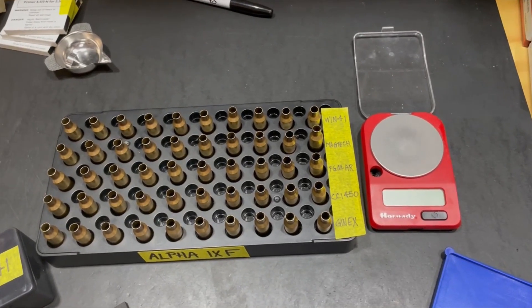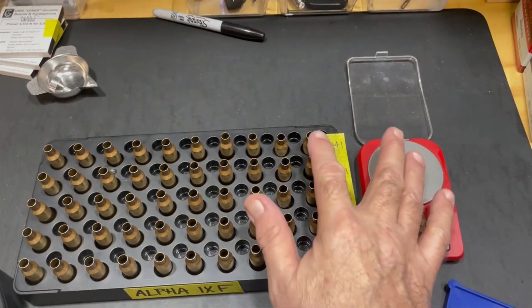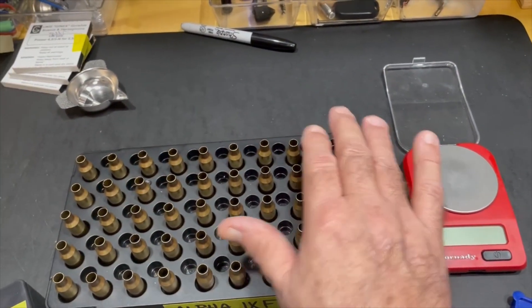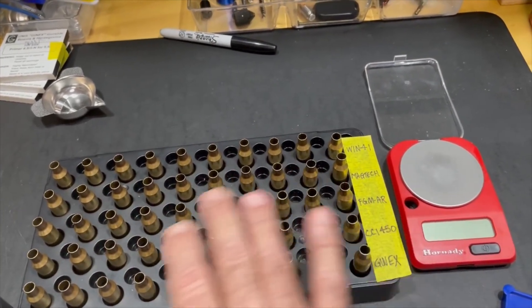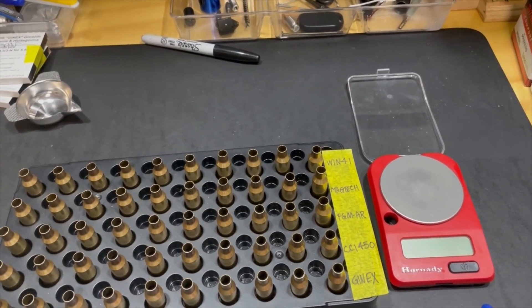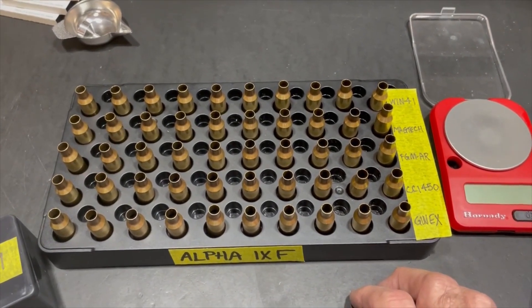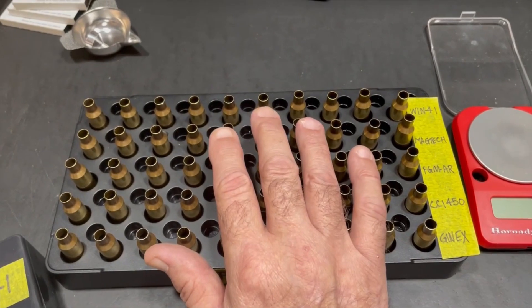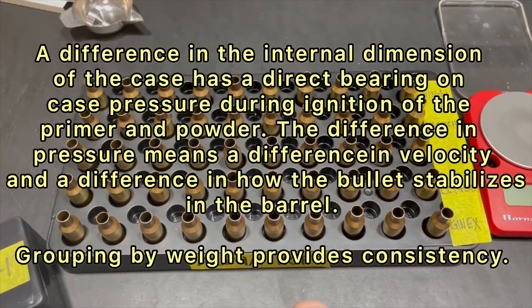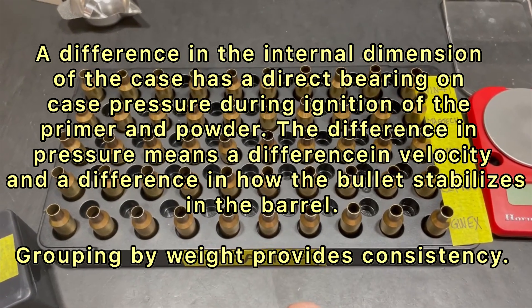I used my little Hornady digital pocket scale to weigh all of the cases and sorted them from lightest to heaviest, from 162.1 to 162.9 grains, with a couple at 163. This is because the internal volume will be different. The purpose is to add consistency to the reloading process.